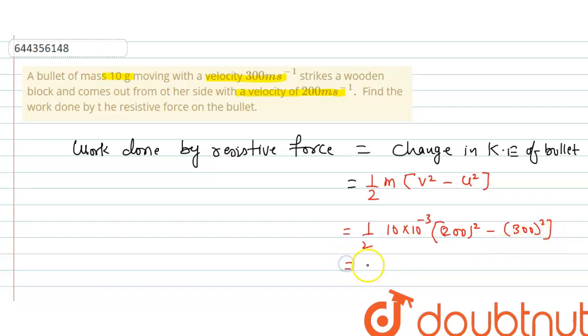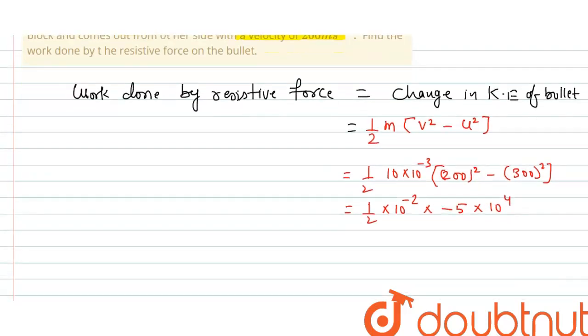So this will be equals to 1 by 2 into 10 to the power minus 2 into 200 square means 4 and minus 9. This equals minus 5 into 10 to the power 4. So this equals minus 2.5 into 10 to the power 4. I hope you have understood the explanation.